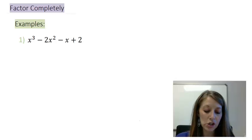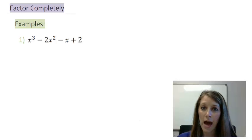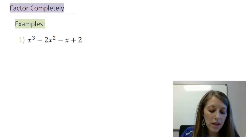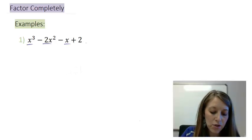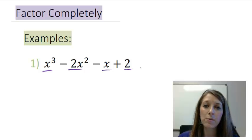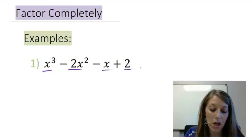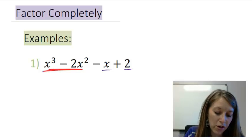So my first thought is do I have any common factors throughout and I do not. Then I count my number of terms. I have four terms so that tells me I'm going to factor this one by grouping. I group my first two terms and I group my last two terms.